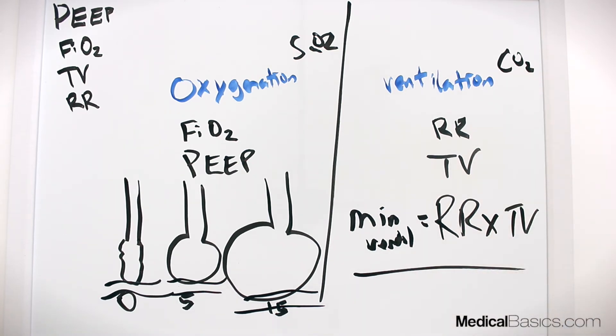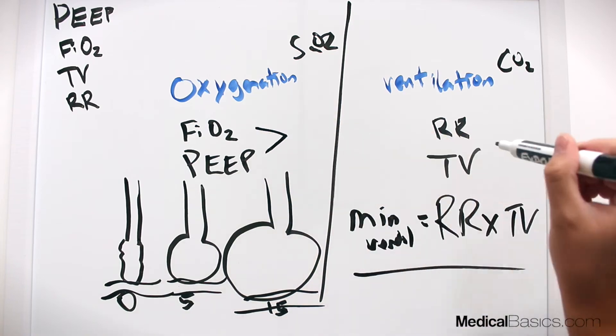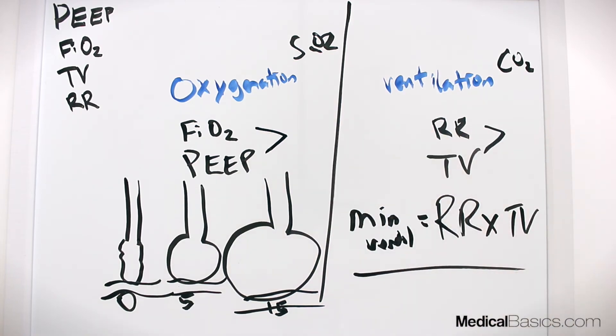And it's a very important concept because when you actually get an ABG and you're looking at it and you want to figure out - well, is this individual getting enough oxygenation or are they getting enough ventilation? - and you know how to adjust the settings. Well that's how you know if you're going to adjust FiO2 and PEEP versus respiratory rate and tidal volume.